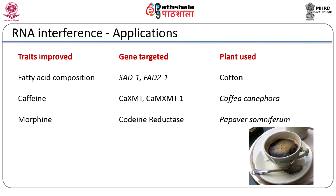RNAi technology has also been used to improve nutritional quality of crops by inhibiting undesirable components. A hairpin RNA introduced into cotton targeted the stearoyl-acyl carrier protein delta-9-desaturase or SAD1. The resulting downregulation of the SAD1 gene substantially increased stearic acid from levels of 2% seen in seeds of non-transformed plants to 40%. Similarly, silencing of the GhFAD2-1 gene resulted in greatly elevated oleic acid content from 15% up to 77% in cotton seeds. With the aim to obtain decaffeinated coffee plants, three genes — xanthosine methyltransferase, theobromine synthase, and caffeine synthase — have been silenced using RNAi technology. The transformed coffee plant showed over 50% reduction in caffeine biosynthesis.